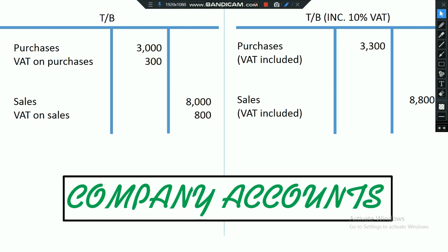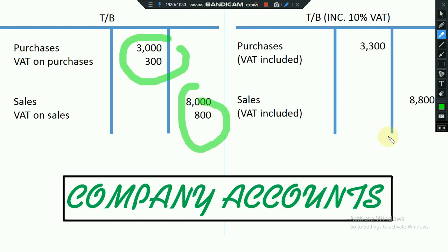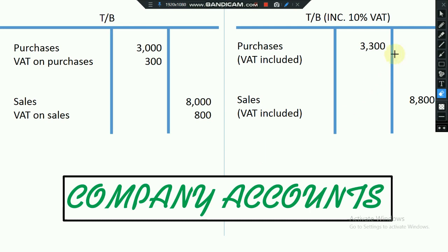In company accounts, you will get a trial balance with some additional information. I gave one trial balance with separated VAT on the left-hand side, and on the right-hand side a trial balance with VAT included. In the left-hand trial balance, purchases and VAT on purchases are separated, and sales and VAT on sales are separated. If you get this kind of trial balance, it is very simple to find VAT.